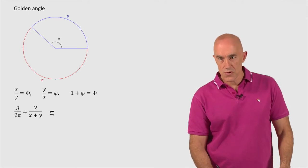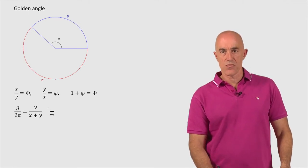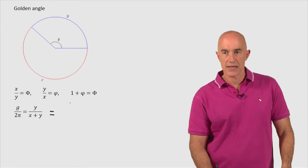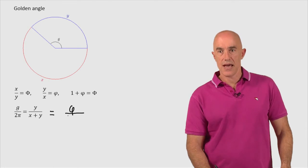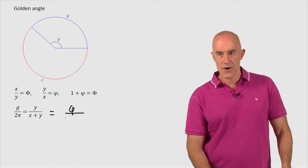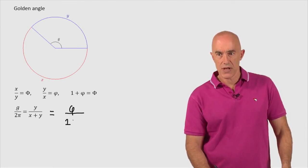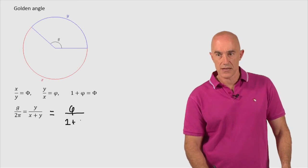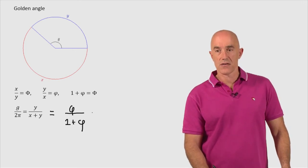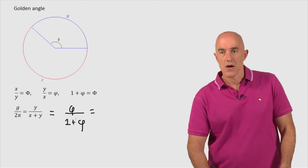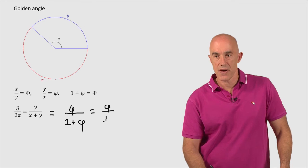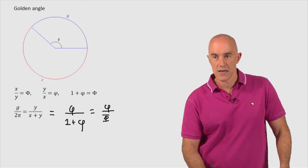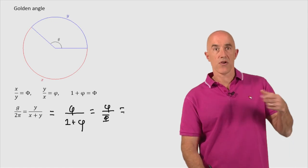Now we can use these formulas to figure out what g over 2π is. So to do that, we can divide numerator and denominator by x. So y over x is phi. And x over x is 1 plus y over x is phi, little phi. 1 plus little phi is big Phi. So this is little phi divided by big Phi. But big Phi is just 1 over little phi.